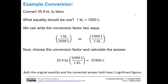Let's convert 35.9 kiloliters to liters. Our equality: one kiloliter is one thousand liters. We can write the conversion factor two ways — either one kiloliter over one thousand liters, or one thousand liters over one kiloliter. We're starting with kiloliters, so we want the conversion factor that has kiloliters on the bottom so it cancels out. So 35.9 divided by one gives us 35.9, times one thousand equals 35,900 liters. Notice we have three significant figures to start and three significant figures in our answer; the two trailing zeros are placeholders.